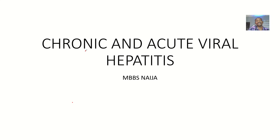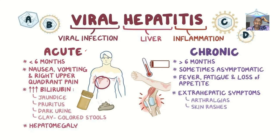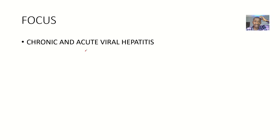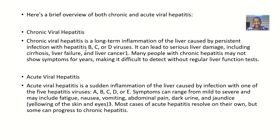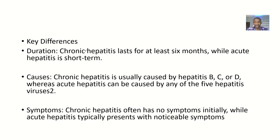Chronic is something that has been there for a very long time, while acute is something that just started within a short time. So on that basis, we get to look at chronic and acute viral hepatitis.